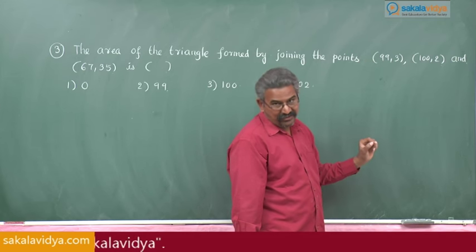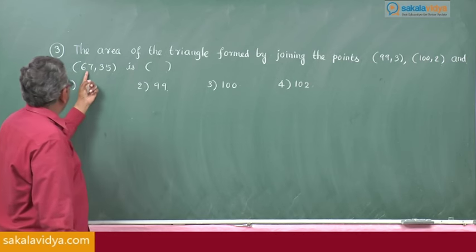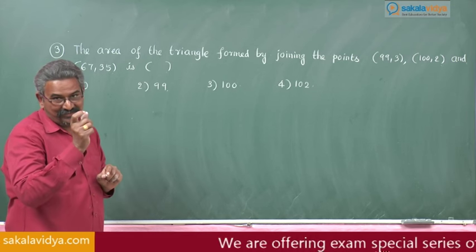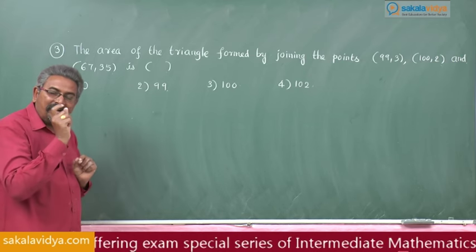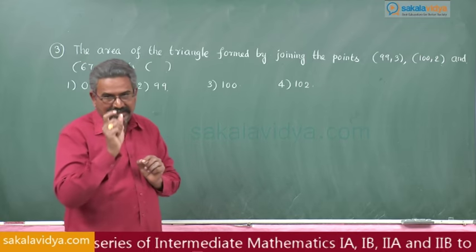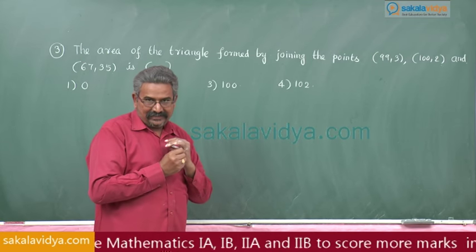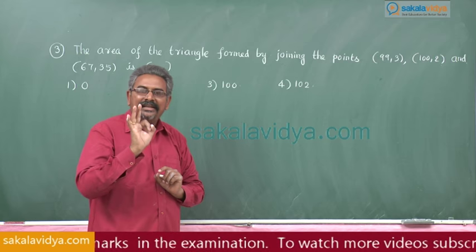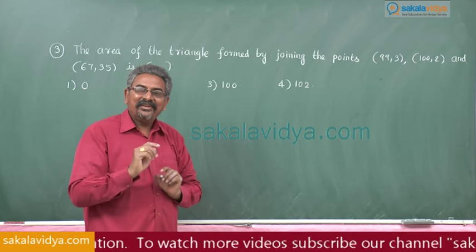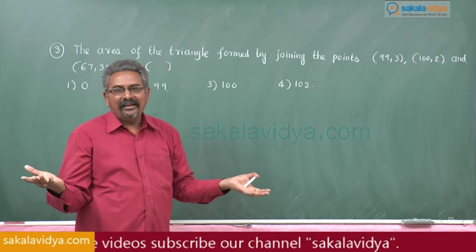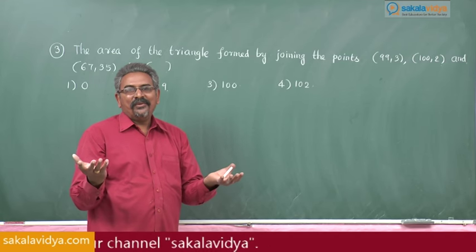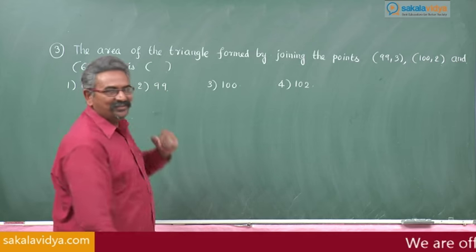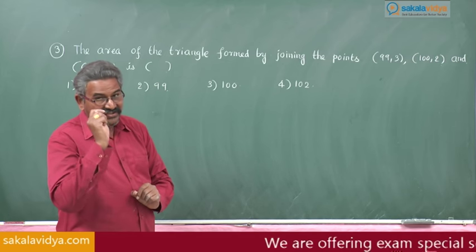Check the second one: 100 plus 2 is also 102. And next: 67 plus 35 is also 102. That means there is a pattern we can observe. If the sum of the two coordinates in the given vertices is the same constant, then they are collinear. If the three points are collinear, can we form a triangle? No, the triangle cannot be formed. As the triangle cannot be formed, the area is obviously 0. So the answer is 0. Shall we remember this as a technique? Yes.